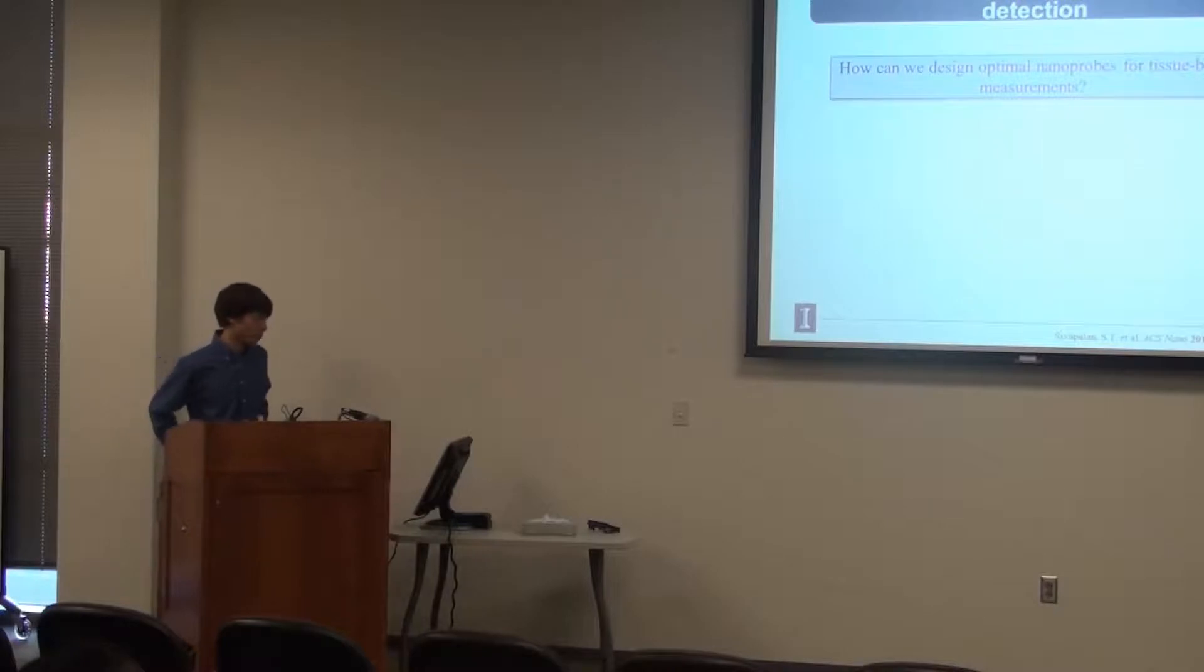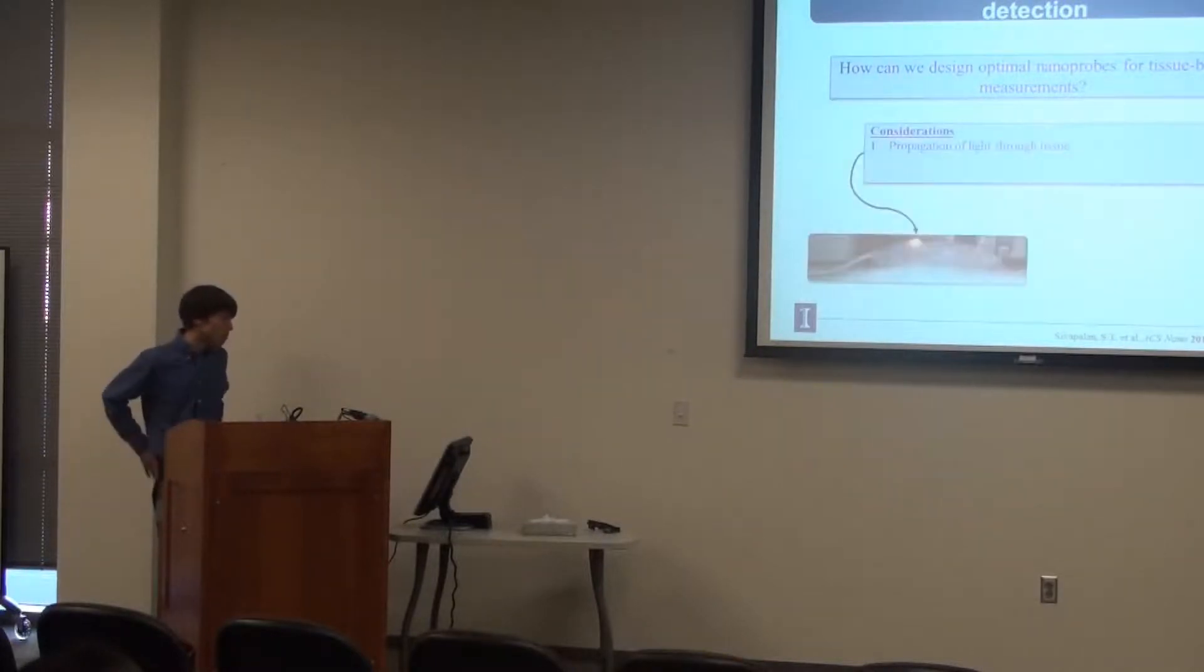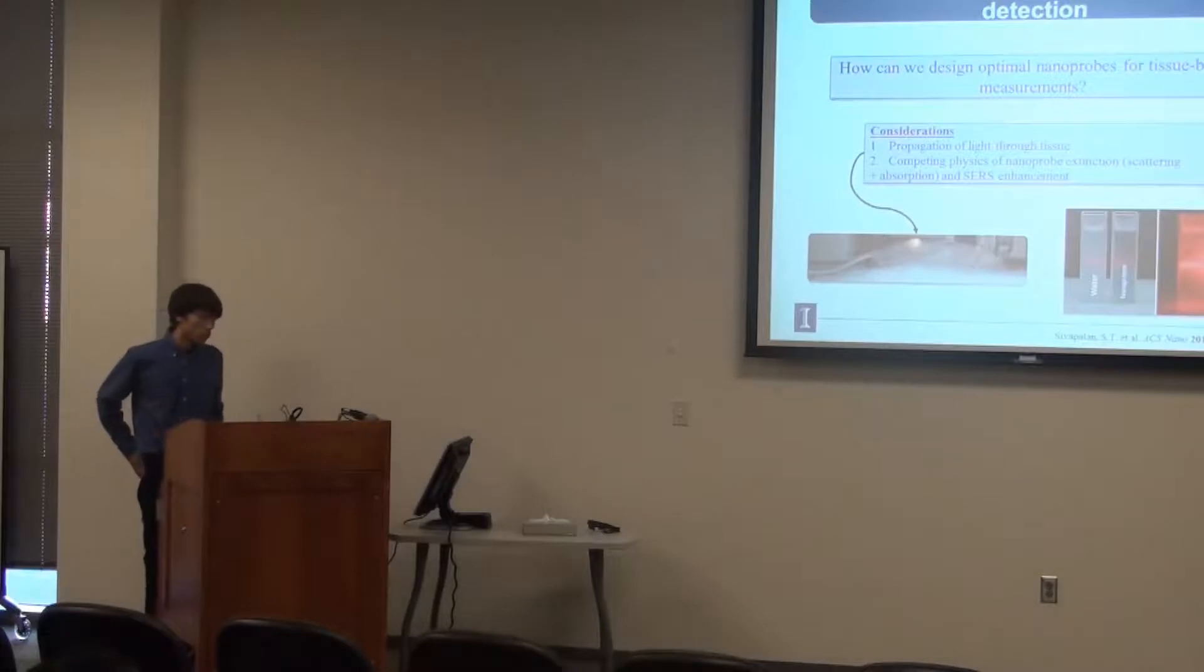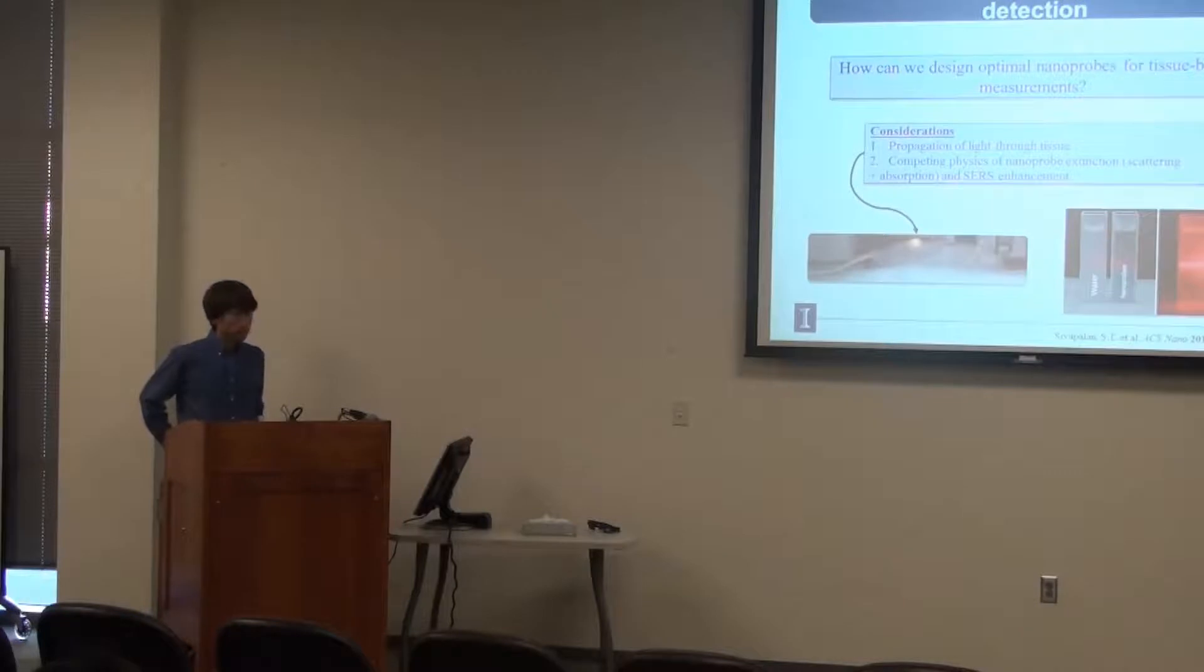So the question we've asked in our research is, what can we do, or how can we design these nanoprobes, such that we can optimize them for tissue-based measurements? And really, the considerations that we have to think about are, we want to be able to propagate light through tissue. And a more difficult consideration is, we have to realize that nanoprobes scatter and absorb light, and we want to be able to measure some sort of surface enhancement.